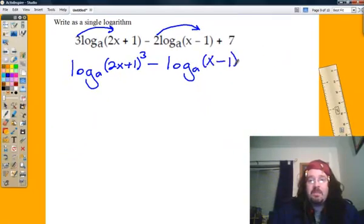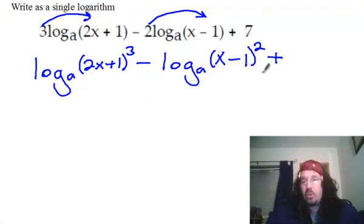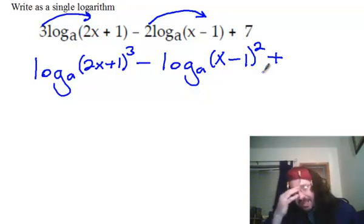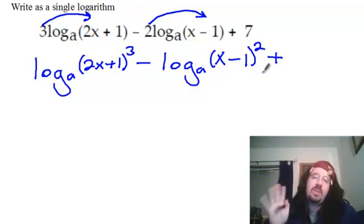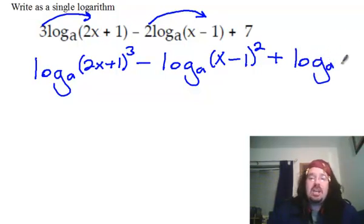Well, now the 7 presents somewhat of a problem because it has to be a logarithm to be combined with the others. So what I need to do is write it as a logarithm and determine what I should put in here as my target so that when my target is cancelled out by the logarithm, I have a 7 left.